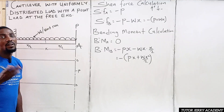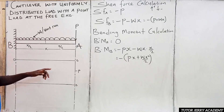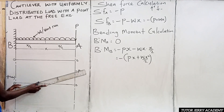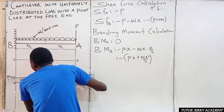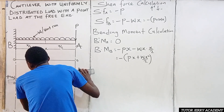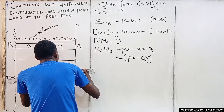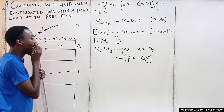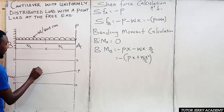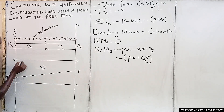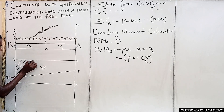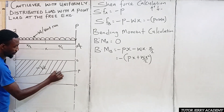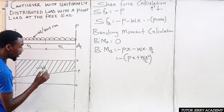Since we have a uniform distributed load throughout, we connect the two points using an inclined line. That inclined line completes the shear force diagram. The entire shear force region is negative.